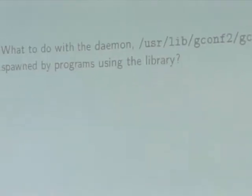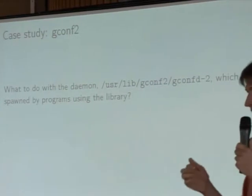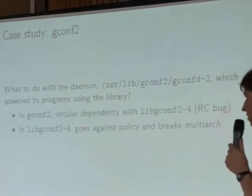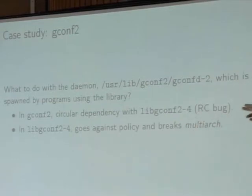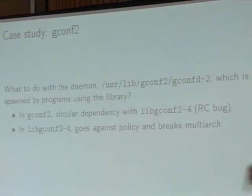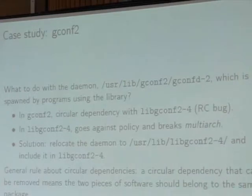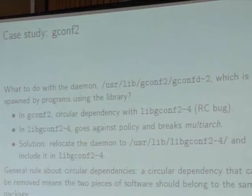But what should we do with the daemon? There is a daemon that is spawned by programs using the library, and it also links to the library. If we put it in gconf2 with the support binaries, we end up with a circular dependency because that would make the library package depend on the binary package. And if we put it in the library package, it goes against policy, which requires library packages to have only versioned files, to allow installing several versions of the same library at once. So the solution is to modify the upstream sources to relocate the daemon to a versioned path, and then you can include it in the library package.